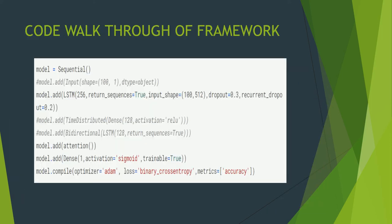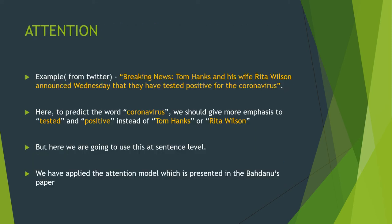For the framework code walkthrough, we define a sequential model, then add an LSTM with 256 units, return_sequences=True, input shape (100, 512), dropout=0.3, and recurrent_dropout=0.2. After that we add an attention layer, then a dense activation sigmoid layer. We compile the model using the Adam optimizer, binary cross-entropy loss, and accuracy as the metric because we have a balanced dataset.